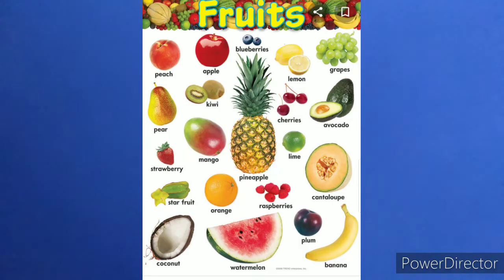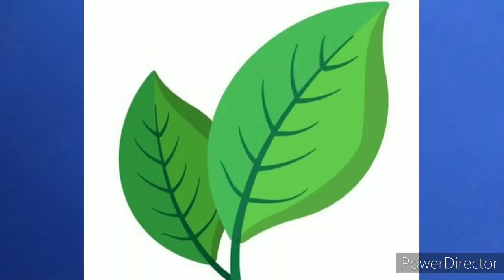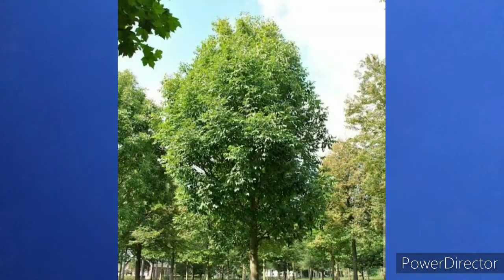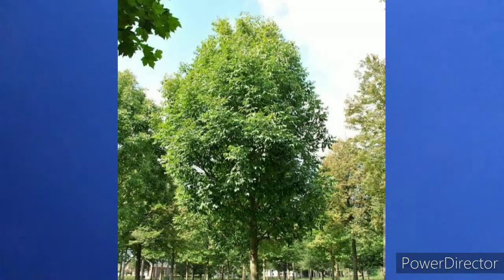The next part is leaves. Leaves of plants are green in colour. Leaves are the life of the plant. Without leaves, plants cannot live. Without leaves, a plant looks ugly. Leaves are life of the plant.